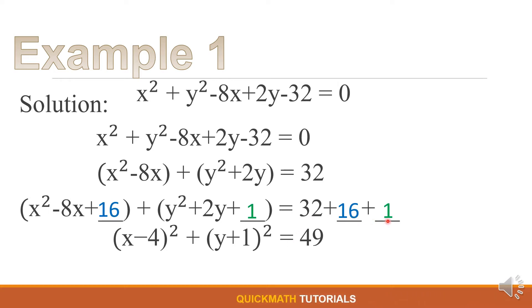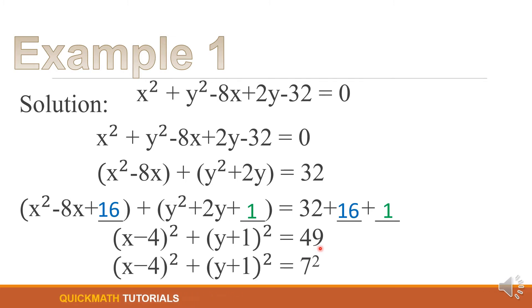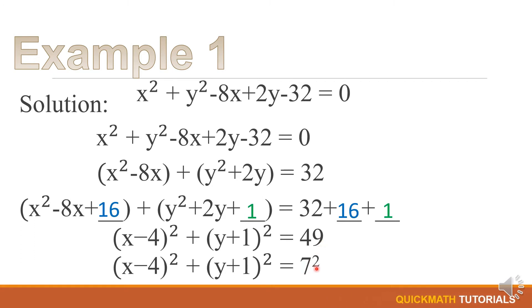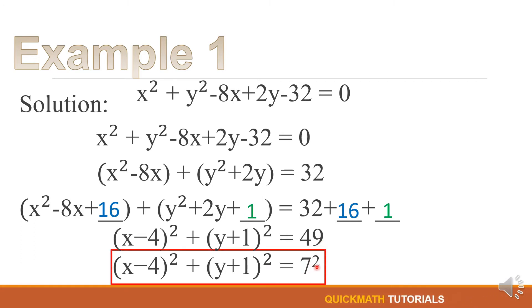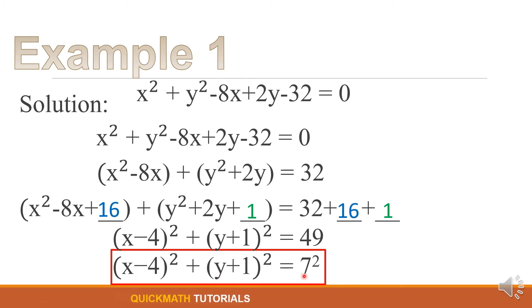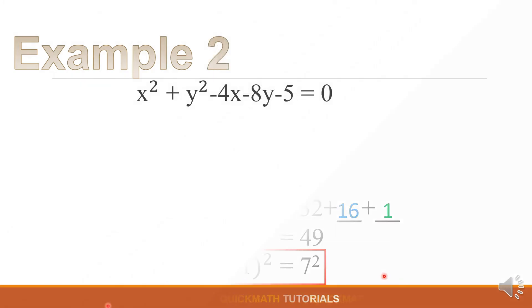This gives us (x - 4)² + (y + 1)² = 32 + 16 + 1 = 49, which can be expressed as 7². Therefore the standard form of this equation is (x - 4)² + (y + 1)² = 7².